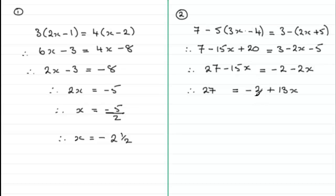Next I want to get rid of the minus two by adding two to both sides. So twenty seven plus two is twenty nine. And that leaves us with the thirteen x, since minus two add two goes to zero.